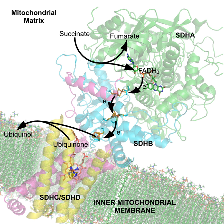Organic cofactors are sometimes further divided into coenzymes and prosthetic groups. The term coenzyme refers specifically to enzymes and, as such, to the functional properties of a protein. Prosthetic group emphasizes the nature of the binding of a cofactor to a protein — tight or covalent — and thus refers to a structural property. Different sources give slightly different definitions of coenzymes, cofactors, and prosthetic groups. Some consider tightly bound organic molecules as prosthetic groups and not as coenzymes, while others define all non-protein organic molecules needed for enzyme activity as coenzymes, and classify those that are tightly bound as coenzyme prosthetic groups. These terms are often used loosely.